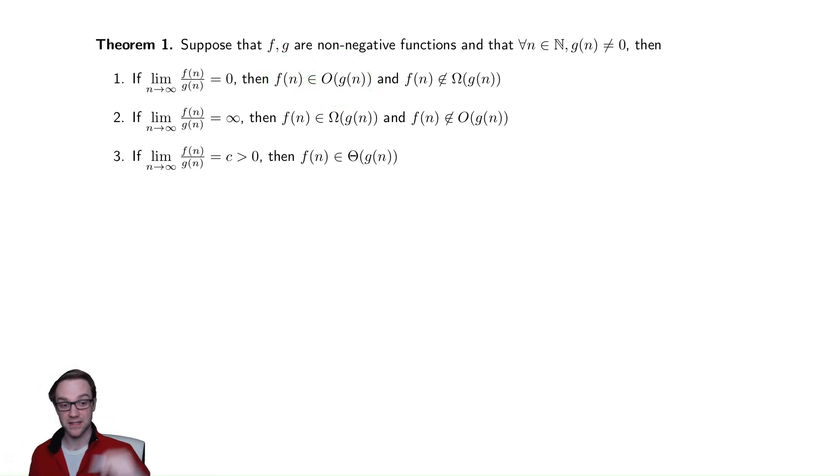Conversely, if that limit gave us infinity, that's that the top would be bigger than the bottom, which again, we write in our omega notation.